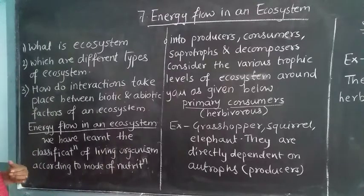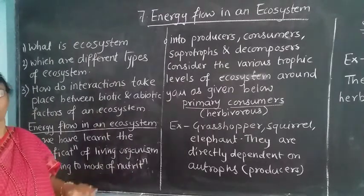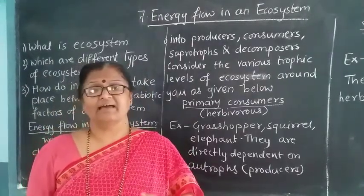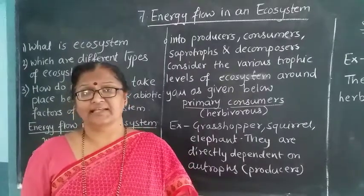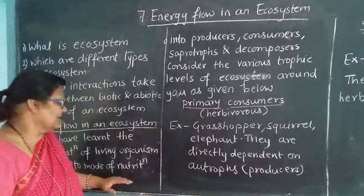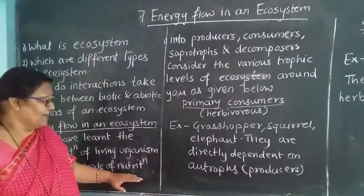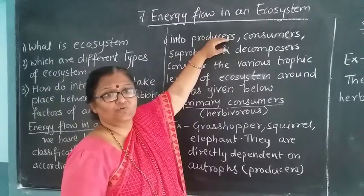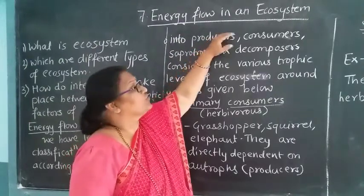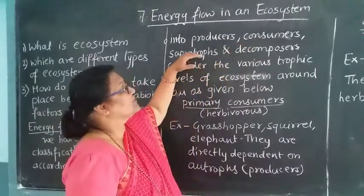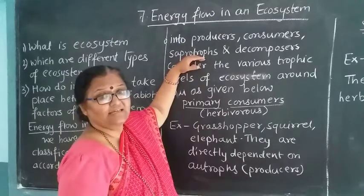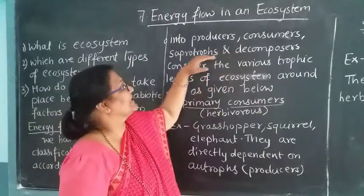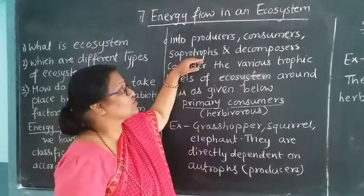Classification of living organisms is done according to the mode of nutrition — the way they take their nutrients inside their body. Into the mode of nutrition, we classify them as producers (those who produce their own food), consumers (those who consume), decomposers (those who depend upon decaying material), and saprotrophs.